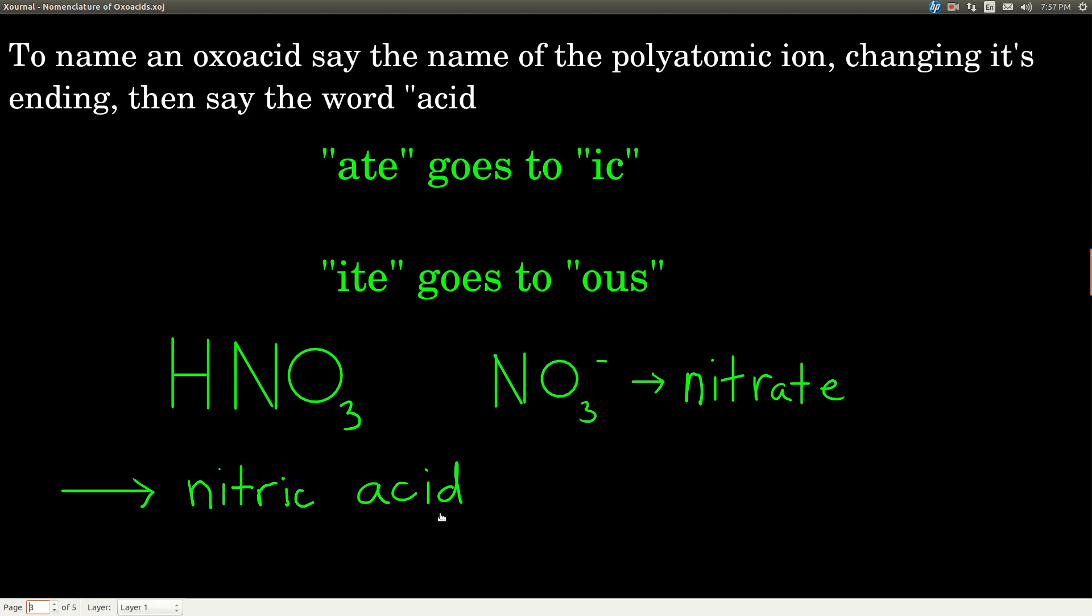When we do that, we're going to say the name of the polyatomic anion, changing its ending. So if it ends in ATE, it goes to IC. If it ends in ITE, it goes to OUS. ATE goes to IC, ITE goes to OUS. And then all you do is say the word acid.